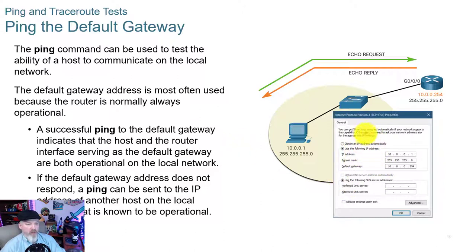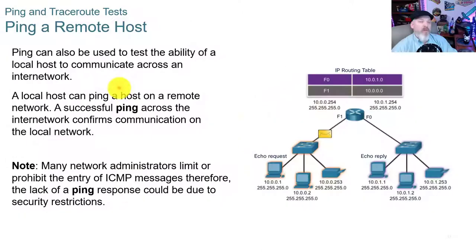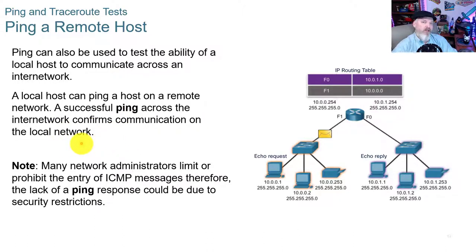Ping can also test the ability of a local host to communicate across an internetwork or routed network. Successfully pinging across the internetwork confirms that local network communication is working and traffic is getting through the default gateway. However, many network administrators limit or prohibit ICMP messages, so a lack of ping response could be due to security restrictions rather than a device being down.